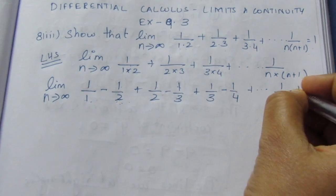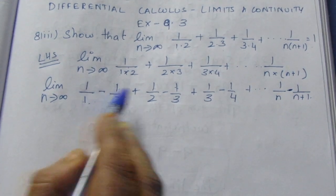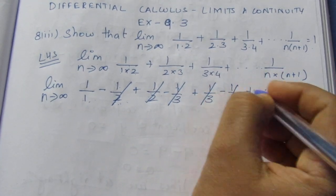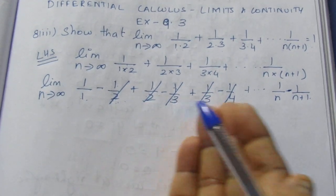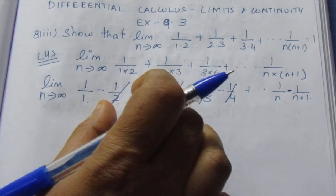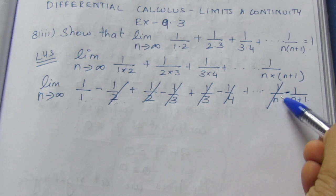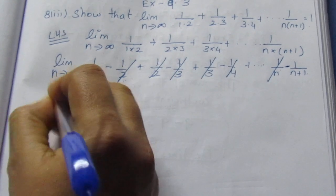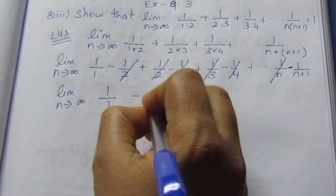We can split all terms together. The 2nd number from each pair cancels with the 1st number of the next pair. After cancellation, we cancel all middle terms. Looking at what remains: limit n tends to infinity of 1/1 - 1/(n+1).